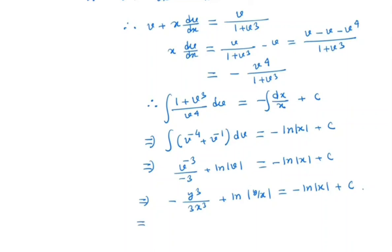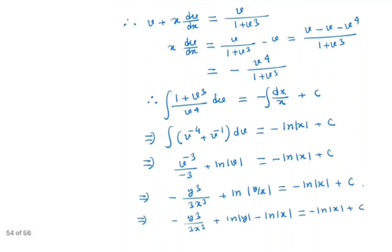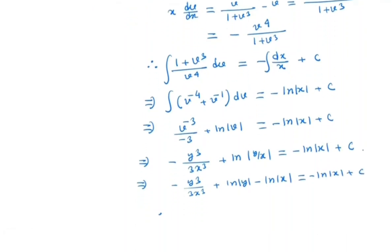Simplifying, we combine the logarithm terms. Canceling minus ln(x) we arrive at the general solution: minus y³/(3x³) plus ln(y) equals c. This is the general solution.